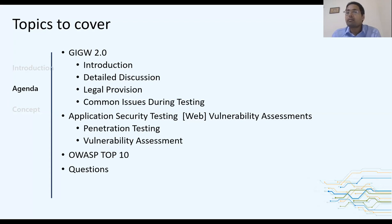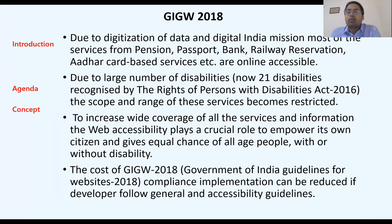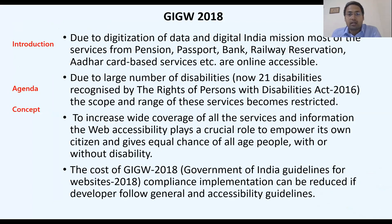To achieve security, we have some guidelines called the OWASP Top 10 — Open Web Application Security Project. We know that due to the digitization of all services, whether pension, passport, banks, or rail reservation, all services are now digitized.